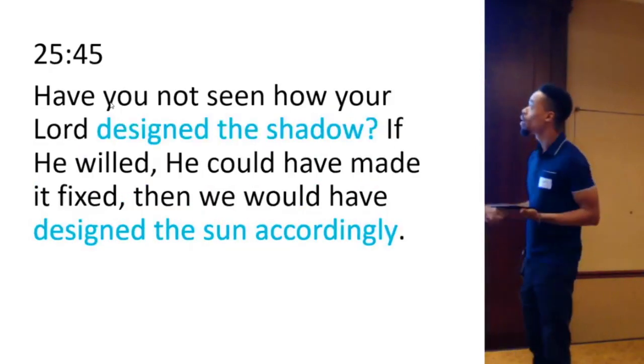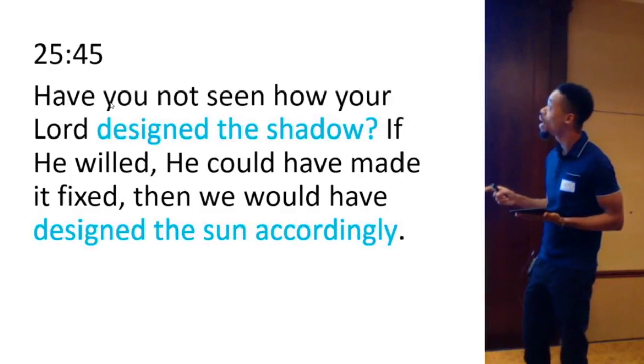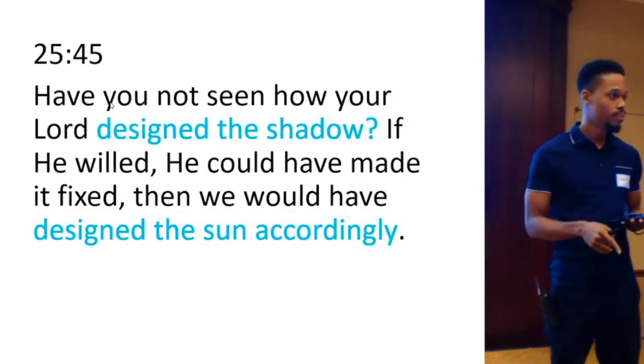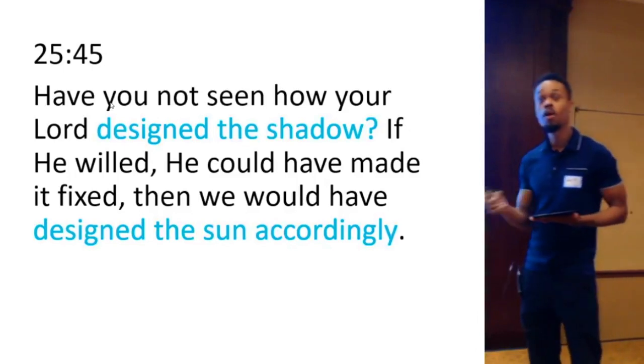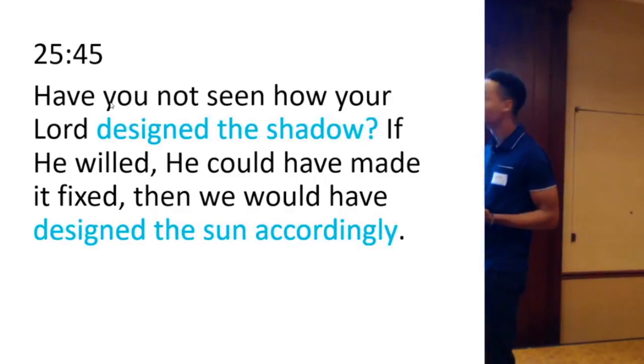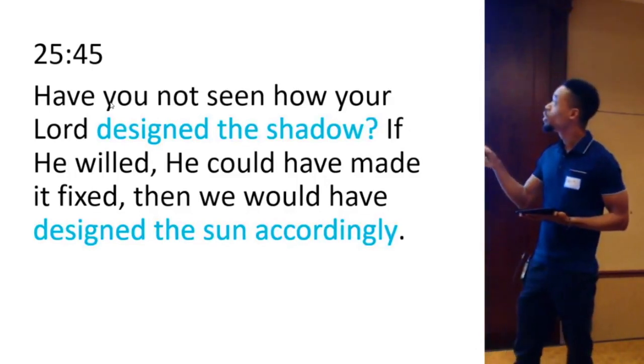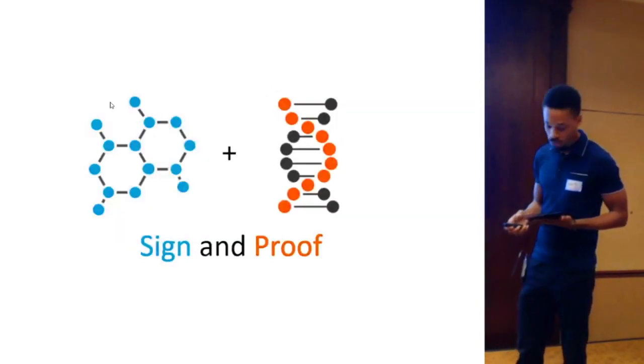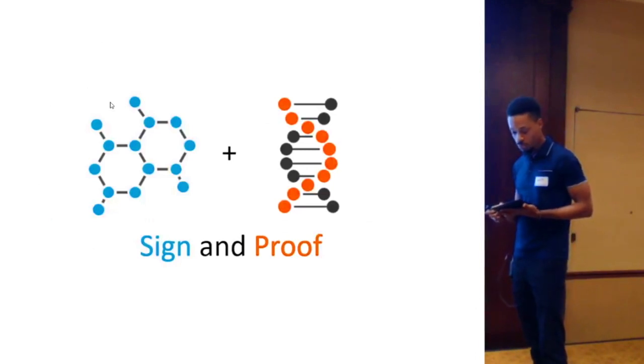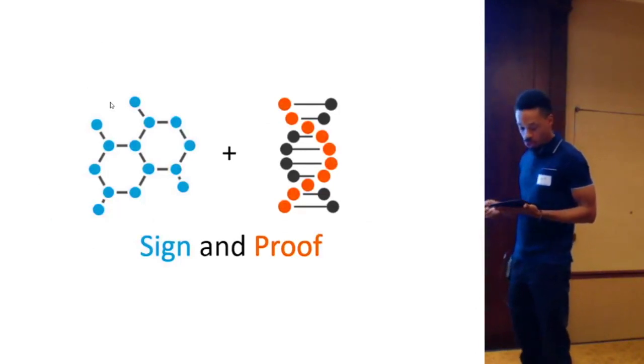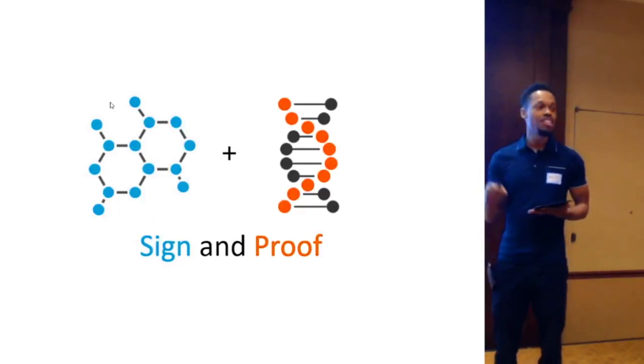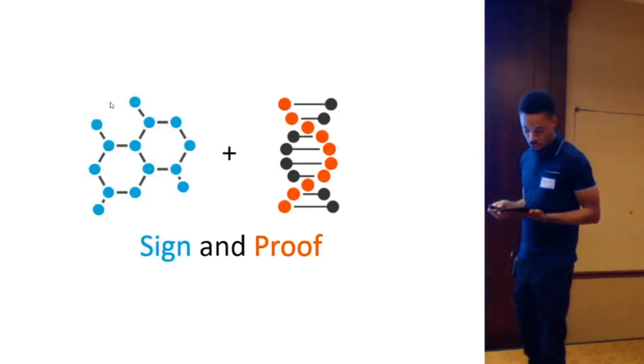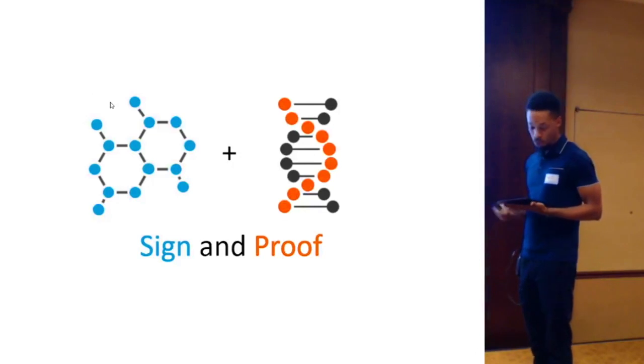In chapter 25, verse 45, it says, have you not seen how your Lord designed the shadow with intention? Design means intention. It was purpose. That's why we say design. If he willed, he could have made it fixed, then he would have designed the sun accordingly. So, shadows teach you something about our relationship with God. Shadows teach you something about your relationship with God. It's both a sign and a proof. And what do I mean by that?